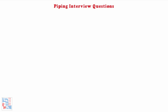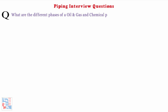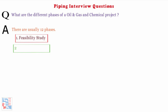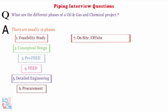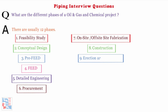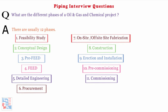Our first video is about general piping topics. What are the different phases of an oil and gas project? There are usually 12 phases: feasibility study, conceptual design, pre-feed, feed, detailed engineering, procurement, on-site or off-site fabrication, construction, erection and installation, pre-commissioning, commissioning, and production.